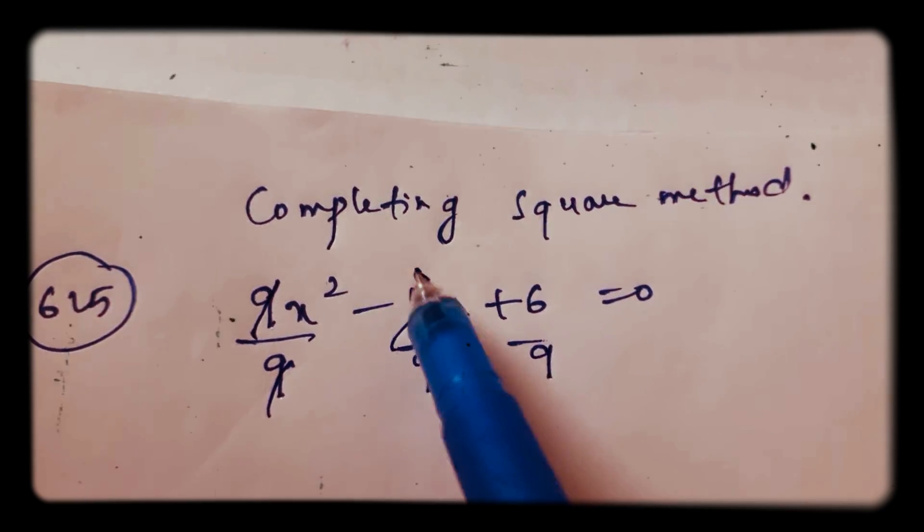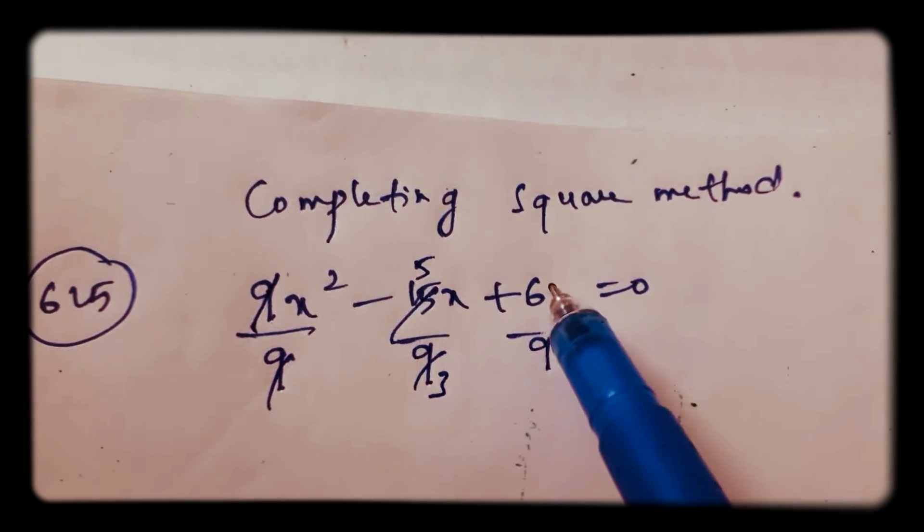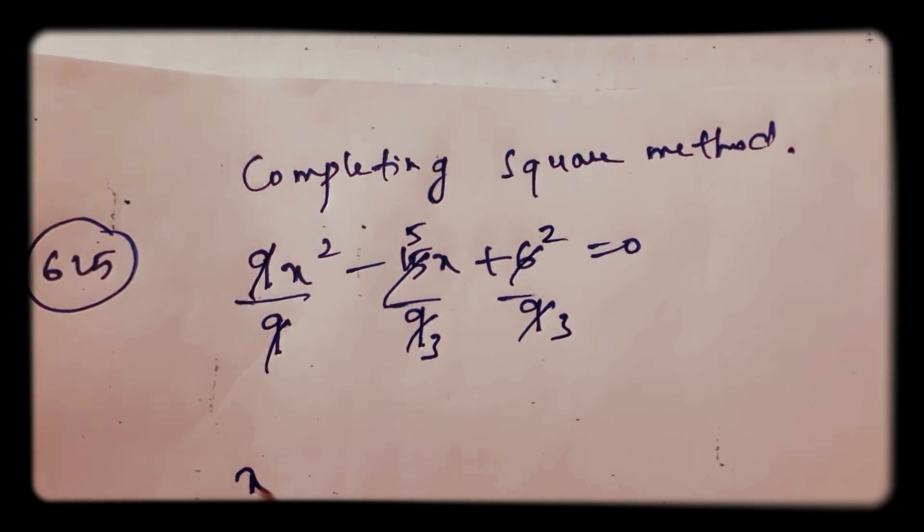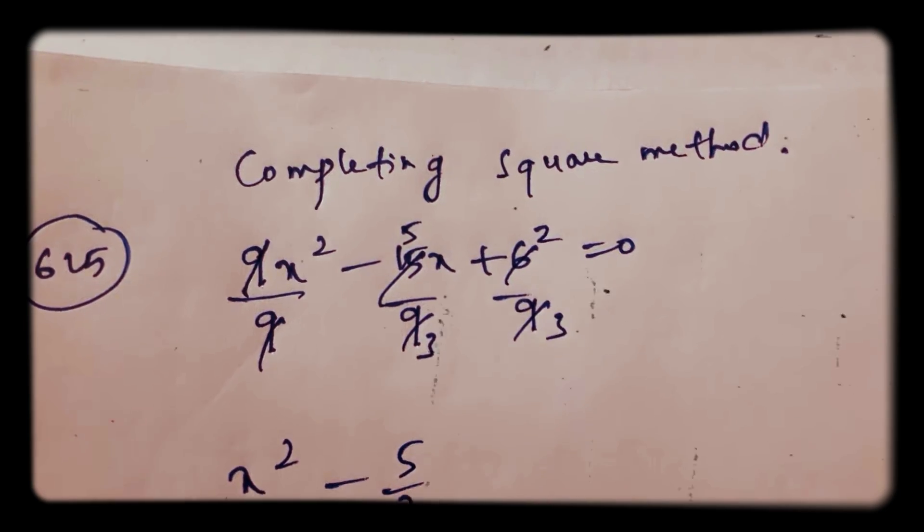So 9 by 9, 15 by 9 is 5 by 3, 6 by 9 is 2 by 3. So x square minus 5 by 3x.